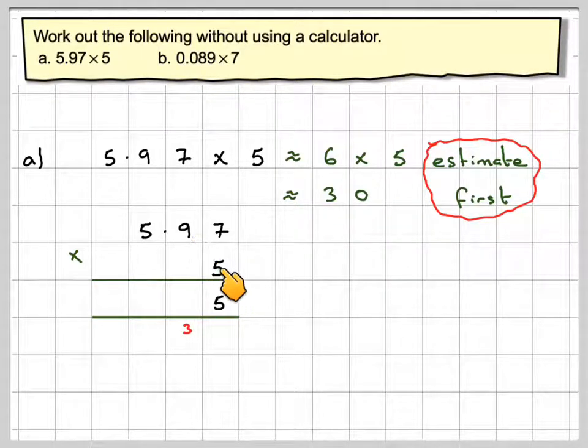5 times 9, which is 45. Plus the 3 will make 8. And we'll need to carry the 4. Don't need to put a decimal point in at this stage yet. And then 5 times 5 is 25. Plus the 4, which makes 29.